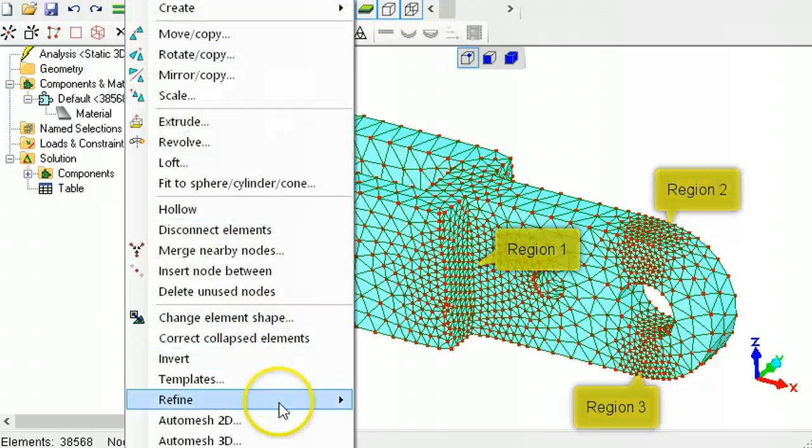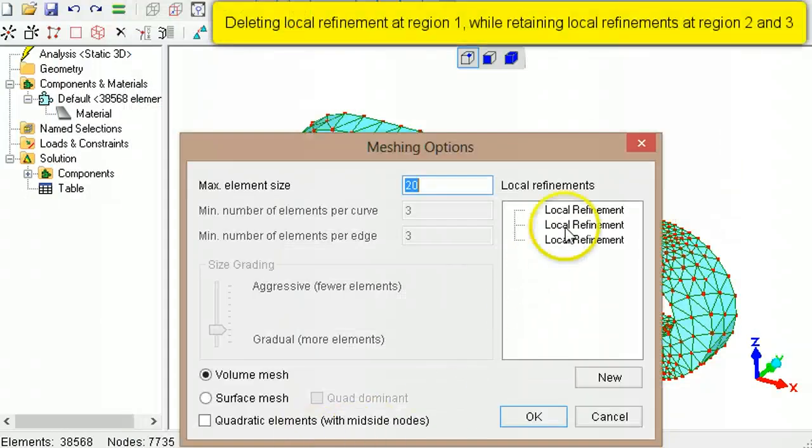If you need to change the local refinement settings, right-click the item in the list to delete it or to edit it.